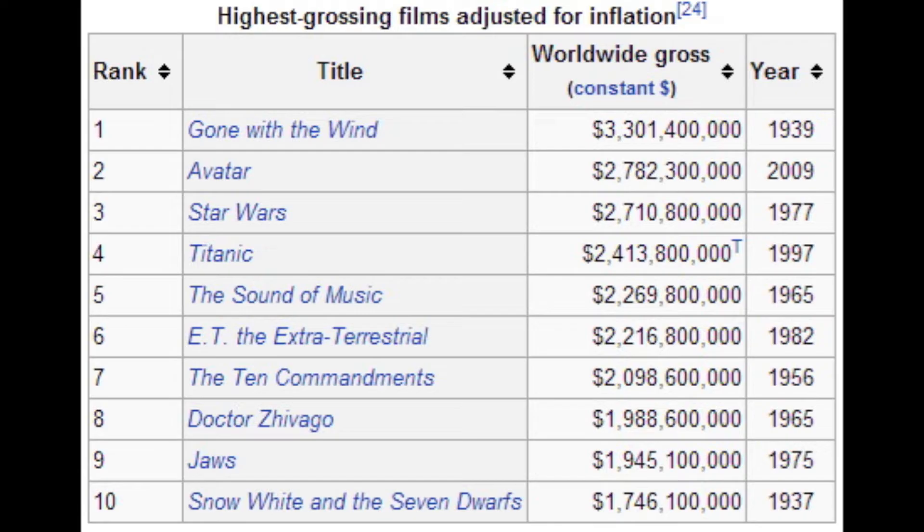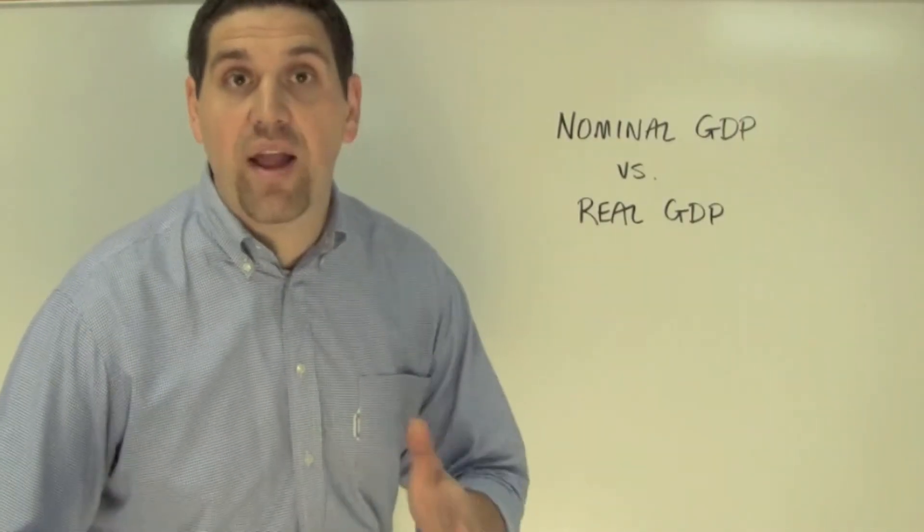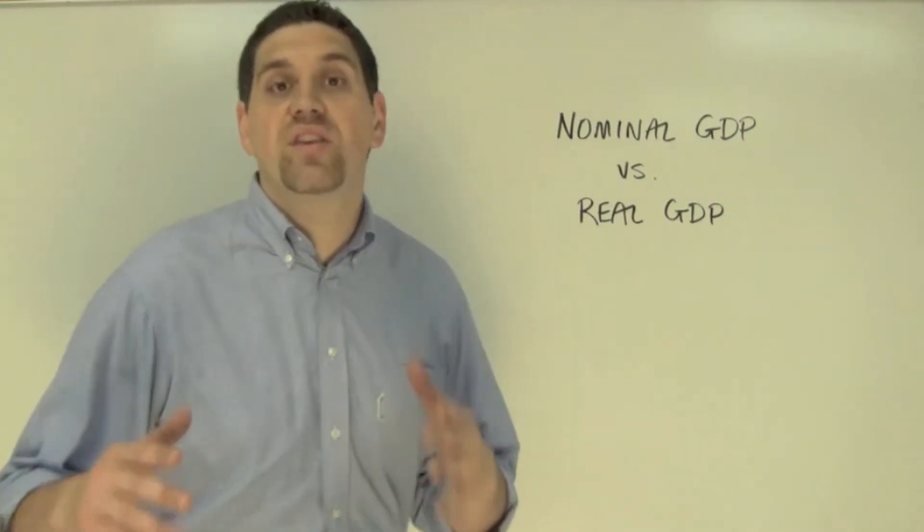So instead of looking at the price of movie tickets in current dollars that change over the different years, we're looking at base year dollars. So if each movie ticket was just five dollars, this is the real adjusted for inflation box office receipts. Now which one of those is better to figure out what the best movie of all time is? Obviously the real.